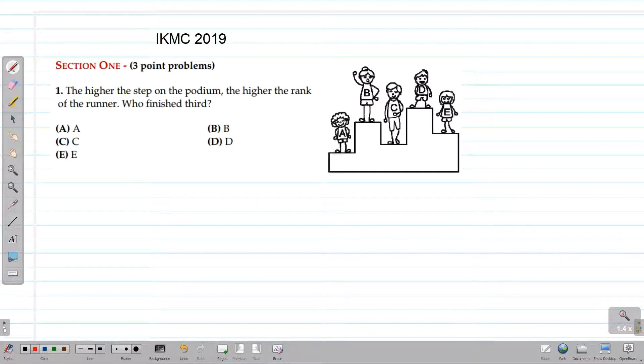the higher the rank of the runner. Who finished third? First, we will have to figure out the rank of each runner on the podium. Runner D is the highest, so his rank is 1. The next higher